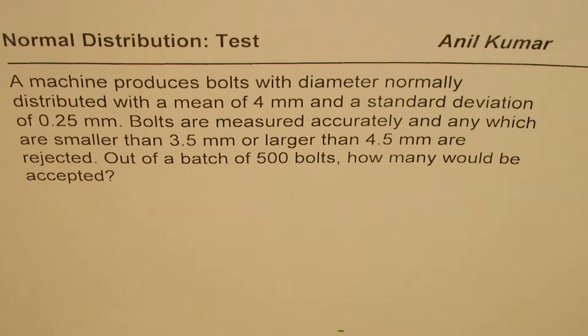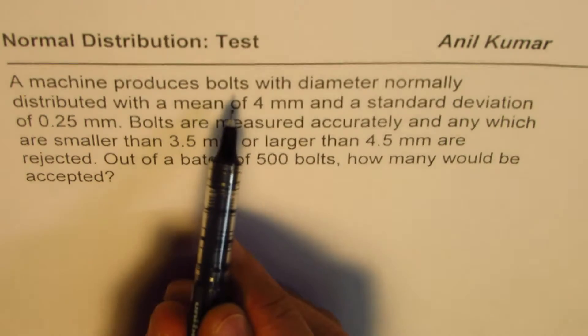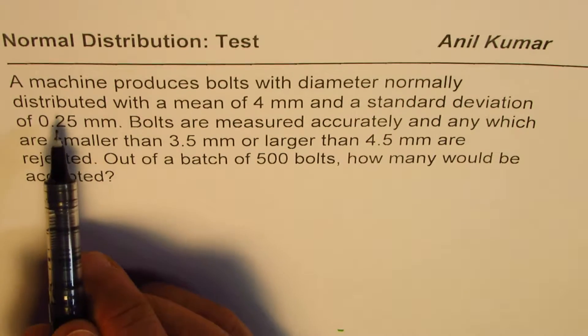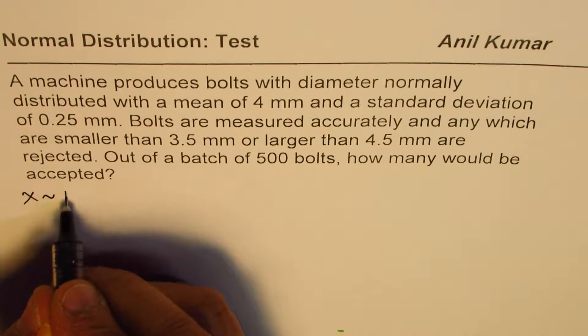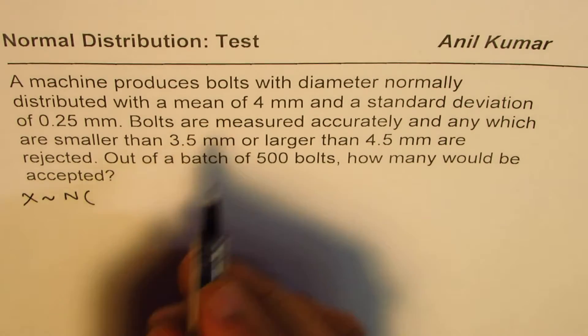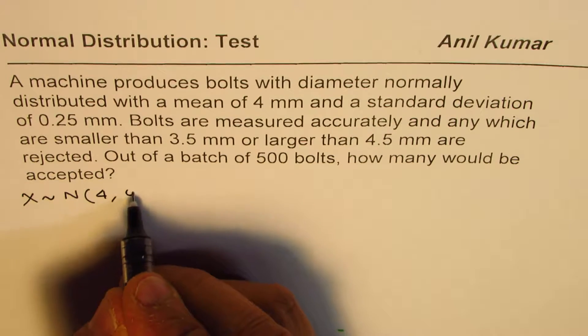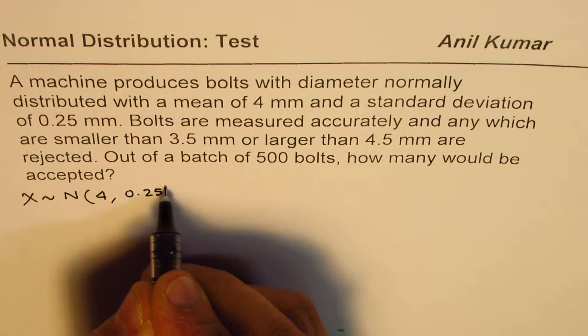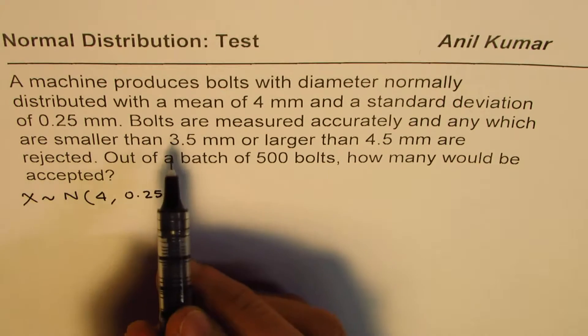You can always pause the video, answer the question, and then look into my suggestions. So let's read the question once again: a machine produces bolts with diameter normally distributed, that means we talk about normal distribution where mean is 4 and standard deviation is 0.25.